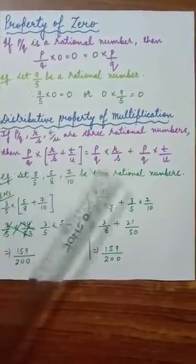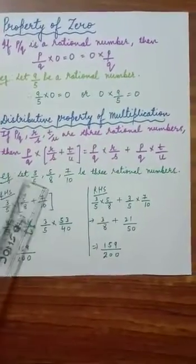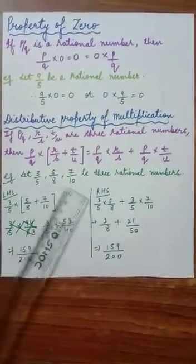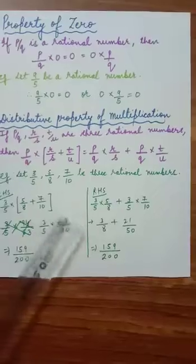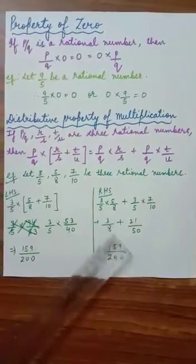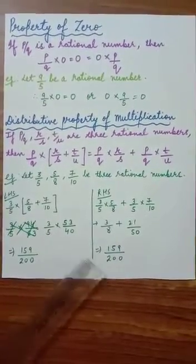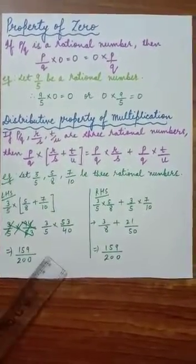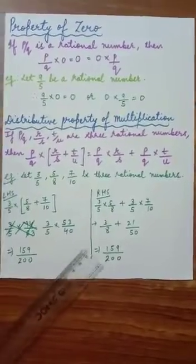LHS is this side and RHS is this side. Let 3 by 5, 5 by 8, and 7 by 10 be three rational numbers. After solving, both sides give 159 upon 200. Your LHS and RHS are the same. Thank you.